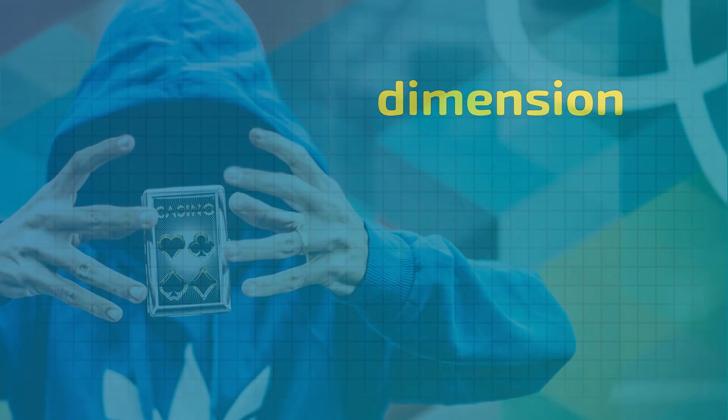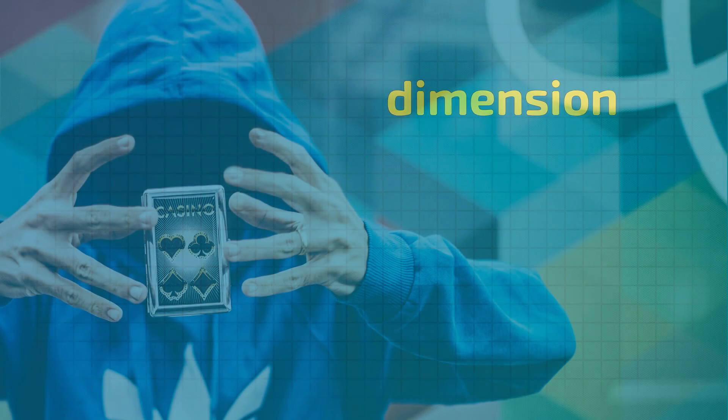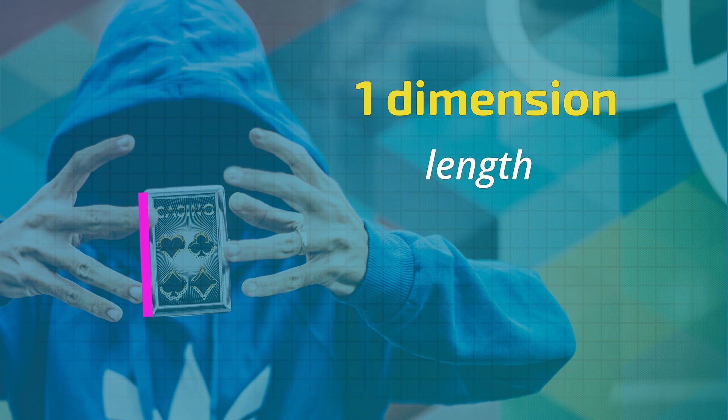A dimension is a measurement in a particular direction. For example, a line only has one dimension, just its length.